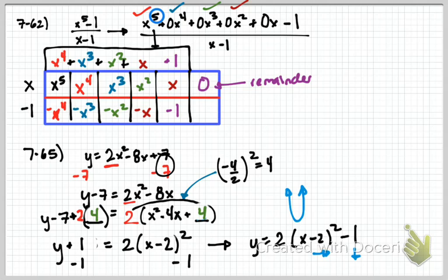Alright, so that's 65. Biggest thing here is make sure you are pulling out these 2s to keep it balanced.